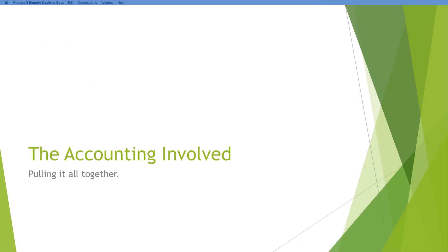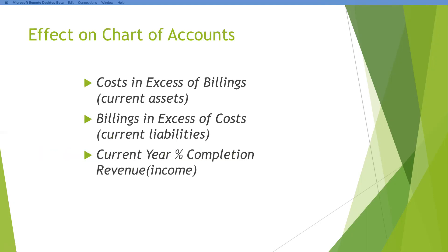We kind of ran through all of that because this is where we're going to dive into the accounting — the percentage of completion accounting that's put together. In the chart of accounts, there are three main accounts that we're going to be dealing with when it comes to accurately accounting for your percentage of completion. And they may be named some different things — that's why I went ahead and also designated where you'll find these on the chart of accounts.